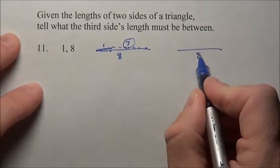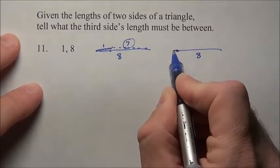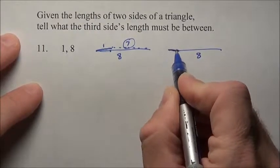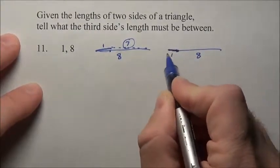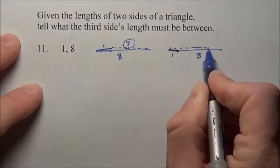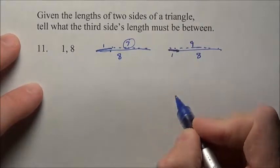What would be as large as it could be? Well, if you had 8, and you took this 1, and you sort of stretched it almost perfectly flat there, you can see that's almost 9, so this third side would have to be a little bit less than 9.